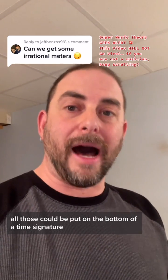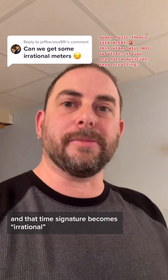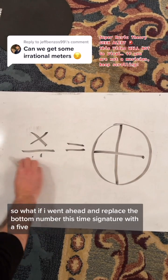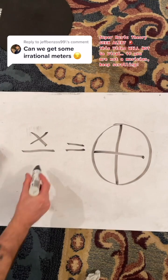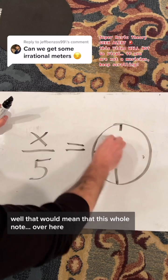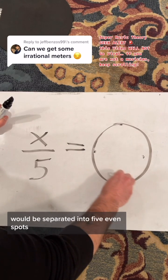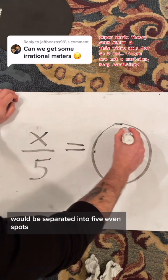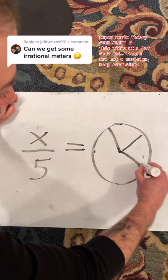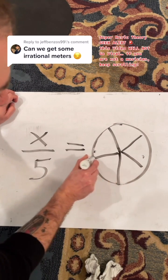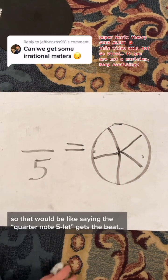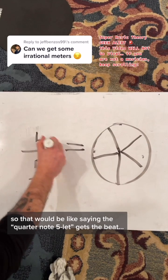All of those could be put on the bottom of a time signature, and that time signature becomes irrational. So what if I went ahead and replaced the bottom number of this time signature with a five? Well, that would mean that this whole note over here would be separated into five even spots.